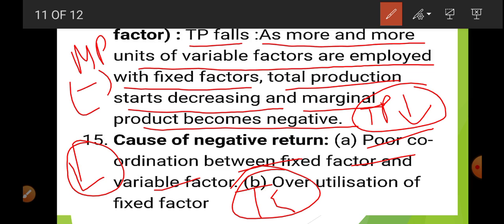One important point: any firm never enters Stage 3. Any firm operates in Stage 2, when TP is maximum and MP becomes zero. Thank you. This chapter is now complete. If you have any doubts, discuss them in the classroom. Come regularly and ask your doubts. Thank you for today.